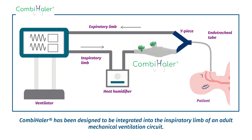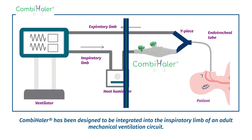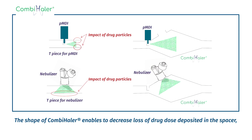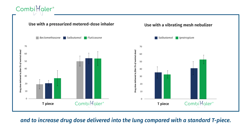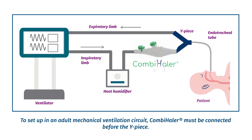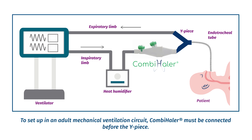Combihaler has been designed to be integrated into the inspiratory limb of an adult mechanical ventilation circuit. The shape of Combihaler enables a decrease in drug dose deposited in the spacer and an increase in drug dose delivered into the lung compared with the standard T-piece. To set up in an adult mechanical ventilation circuit, Combihaler must be connected before the Y-piece.